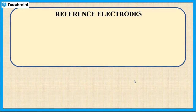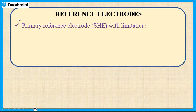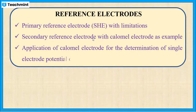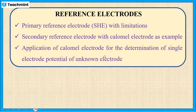Overall, we discussed reference electrodes and their two types: the primary reference electrode, taking the Standard Hydrogen Electrode as an example, and the secondary reference electrode, taking the calomel electrode as an example. We also discussed the application of the calomel electrode for the determination of the electrode potentials of the copper electrode and the zinc electrode.